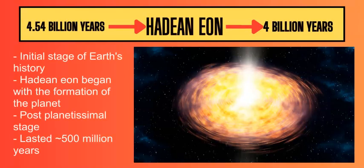The Hadean Eon is the starting point for Earth's history — the formation, the point where the Earth was formed and developed as a terrestrial planet, the third rock from the Sun. This began about 4.54 billion years ago, literally as the Sun was forming and coalescing, grouping all the rocky materials and heavy elements close to the Sun to form the four terrestrial planets, Earth being one of them. It lasted about 500 million years, up to about 4 billion years in Earth's history.